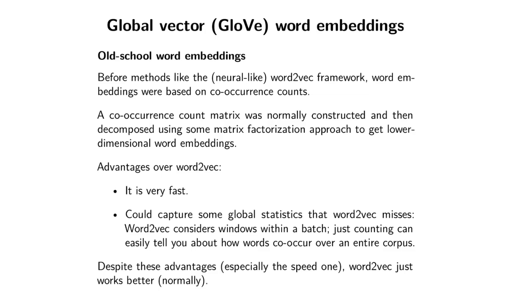The idea of GloVe is to combine the ideas from Word2Vec with some of the more old-school ideas that preceded Word2Vec. There were actually word embedding approaches just before Word2Vec that probably inspired the more neural network-like Word2Vec framework.